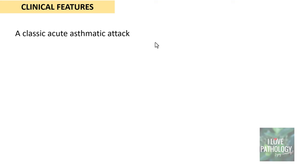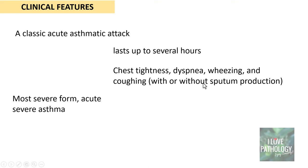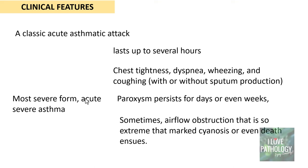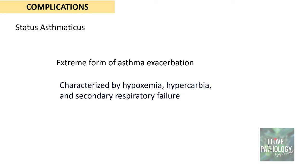How do asthmatic patients manifest? A classic acute asthmatic attack can last up to several hours, manifesting with chest tightness, dyspnea, wheezing, and coughing with or without sputum production. A more severe form — acute severe asthma — involves paroxysms persisting for days or even weeks, where airflow obstruction is so severe that marked cyanosis or even death can ensue. This brings us to the complication of status asthmaticus: an extreme form of asthma exacerbation characterized by hypoxemia, hypercarbia, and secondary respiratory failure, which can result in death if not identified early and managed well.